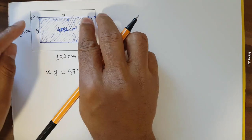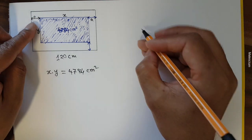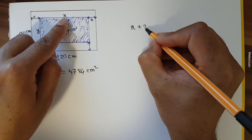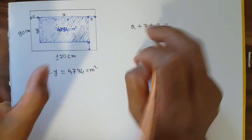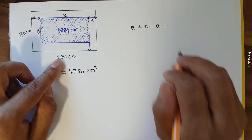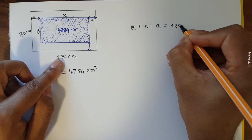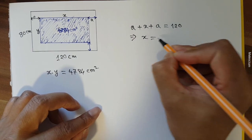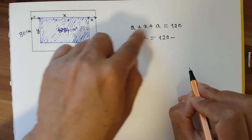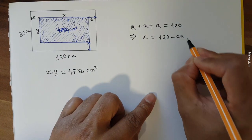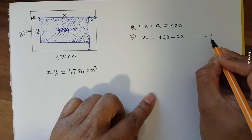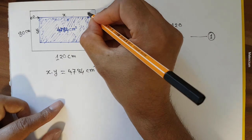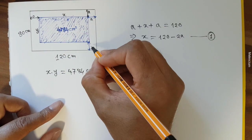Since the offset on each side is a, I can write: a plus x plus a equals the total length, 120. That means x equals 120 minus 2a. Let's keep this as equation number one.